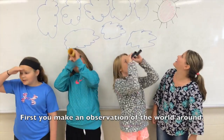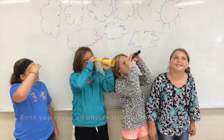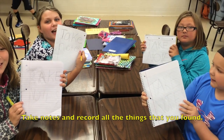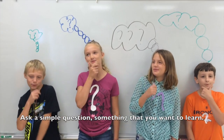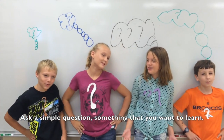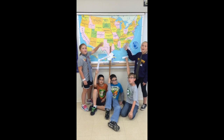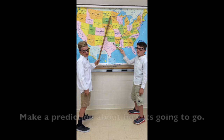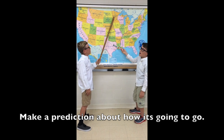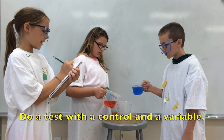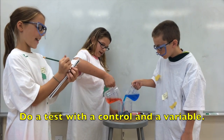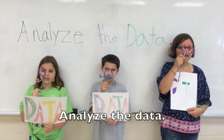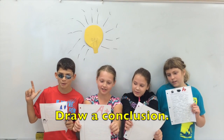Make an observation of the world around. Take notes and record all the things that you found. Then you ask a simple question, something that you want to learn. Then you form a hypothesis to explain what you observed. Then you make a prediction about how it's going to go. Do a test and control and a variable. Then you analyze the data and draw the conclusion.